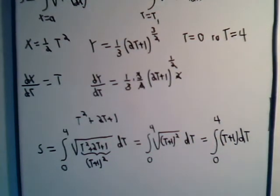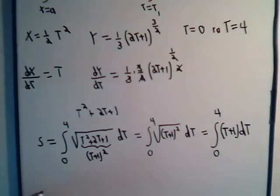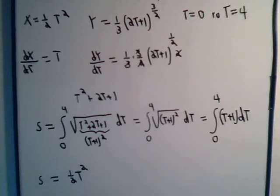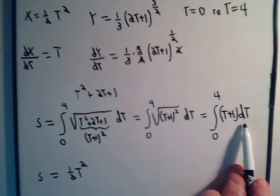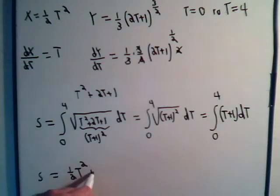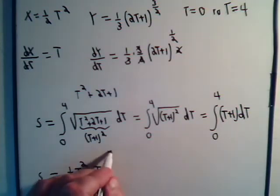So we want to integrate that, so S will equal ½t² plus the integral of dt, that's just t, and it goes from 0 to 4.